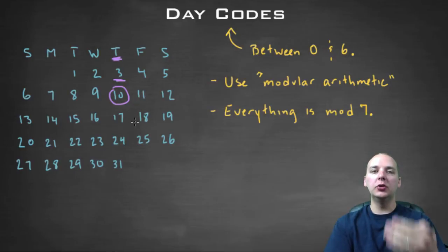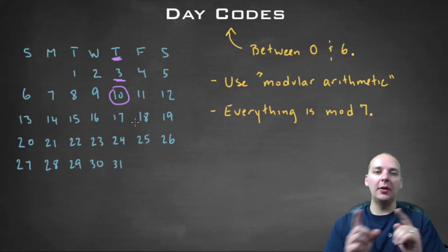So we can drop back in multiples of seven to wind back up in a range between zero and six.